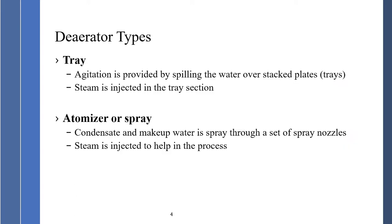There are two types of deaerators. One is a tray type — agitation is provided by spilling water over stacked trays, and steam is injected into the tray section to assist in the deaerator operation. The other is an atomizer or spray type, where condensate makeup water is sprayed through a set of spray nozzles and steam is injected to help in the process.